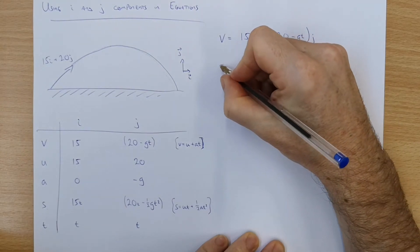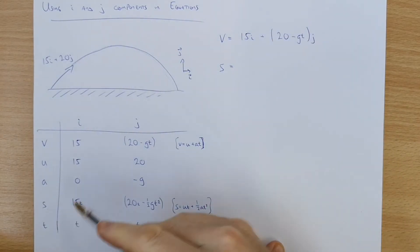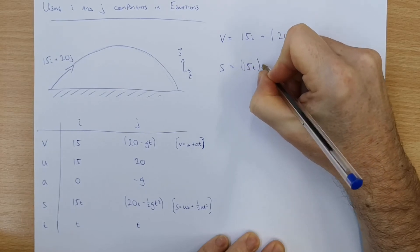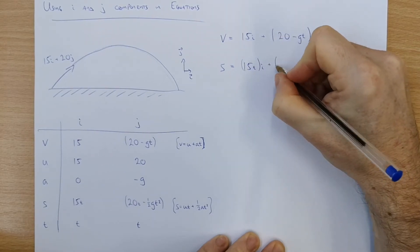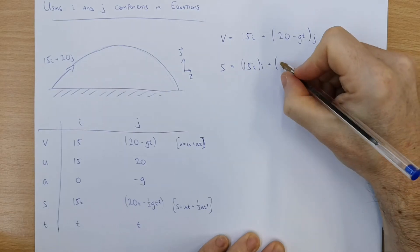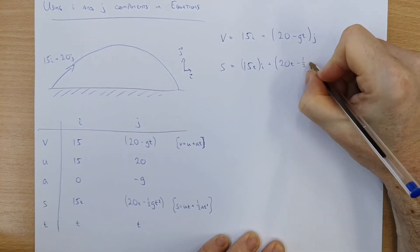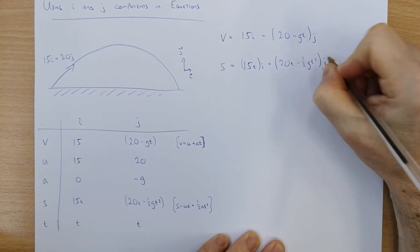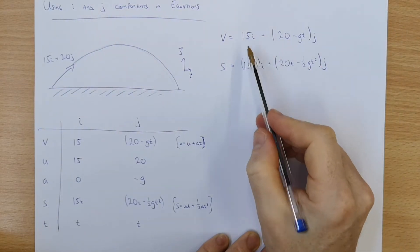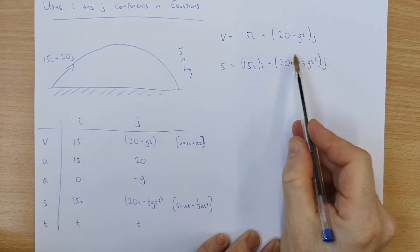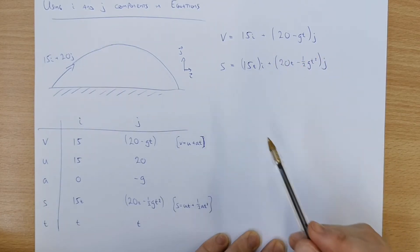We can do the same for s. So again s for our i component is 15t in the i direction and 20t minus half gt squared in the j direction. It's the i direction and the j direction that's why that's plus. What's inside the brackets may end up being minus but we worry about that afterwards.